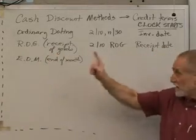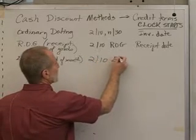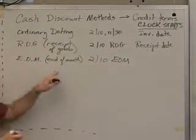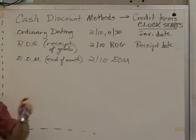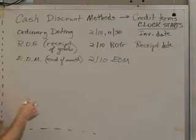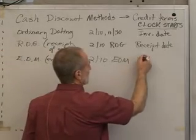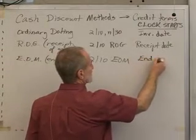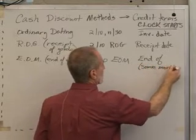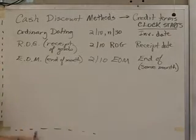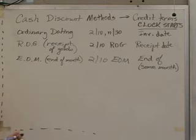Then the third way, which is a very common way of doing it, is called EOM. By the way, I have a resource on the website that lists all these, summarizes it, tells you what you use, what you ignore, that sort of thing. But this 2/10 EOM says the clock starts at the end of some month. Now before I explain that, I'd like to do some examples of the first two so you can see how they work and then we'll do EOM.